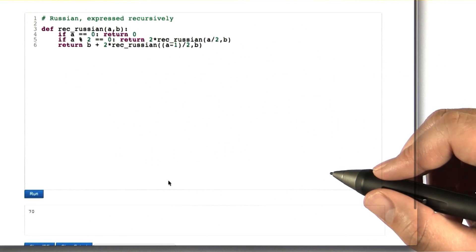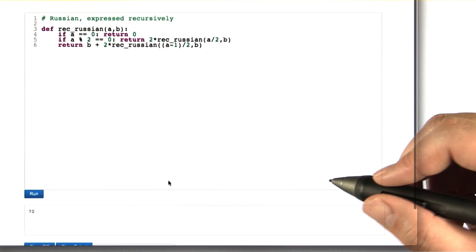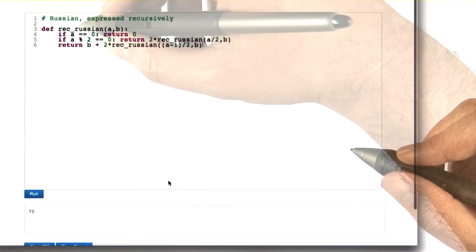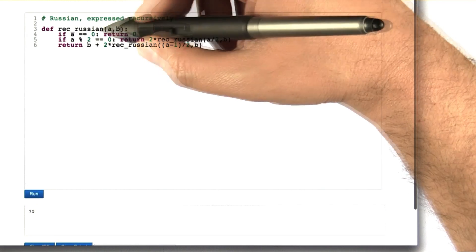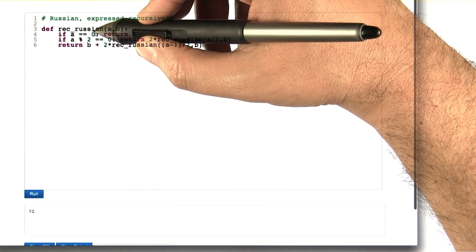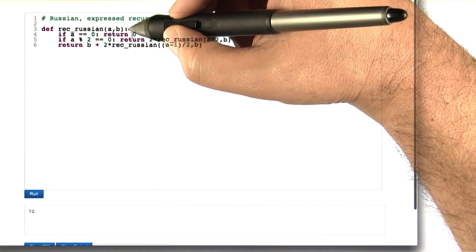This way of looking at the Russian peasant's algorithm leads to a very interesting way of expressing the algorithm recursively. The idea here is that what we're going to do is multiply a and b together. What we're going to do is say if a is 0 to start, we can just return 0 and be done with it.